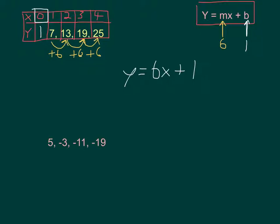On the lower one, I can see that going from 5 to negative 3 means I have to subtract 8. Negative 3 to negative 11, subtract 8. Negative 11 to negative 19, subtract 8. So I know that in my formula, m is going to be negative 8.